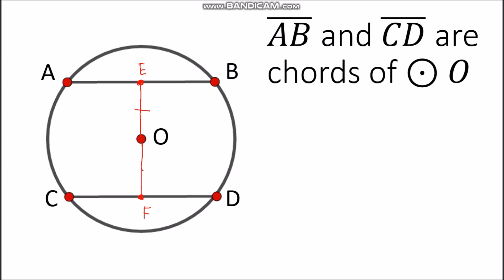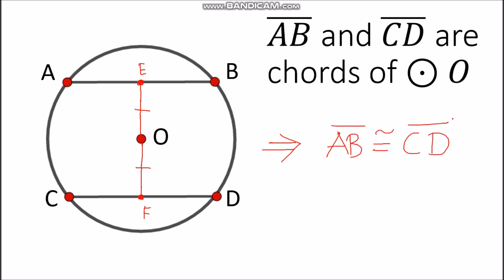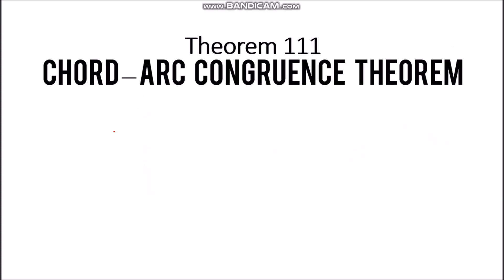Now if EO has the same distance as FO, or they are congruent, then by the Distance Chord Theorem you can say that AB is also congruent with CD. So the two chords are congruent since they are equidistant from the center of the given circle. Next we have Theorem 111, which is the Chord Arc Congruence Theorem.